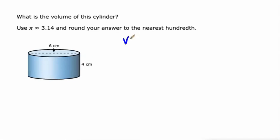Let's do this again. Volume equals pi r squared h. So 3.14 is going to be our approximation of pi.